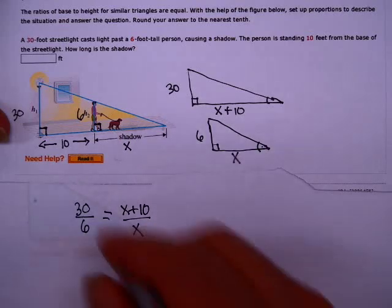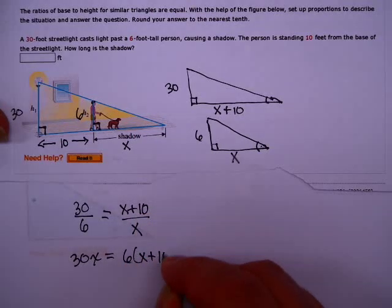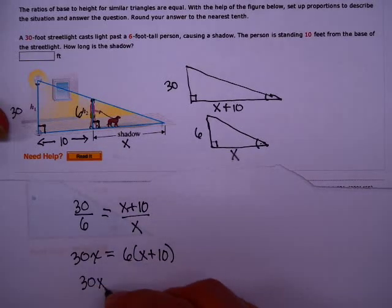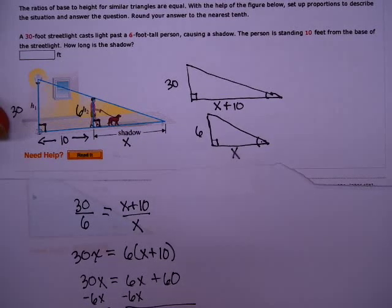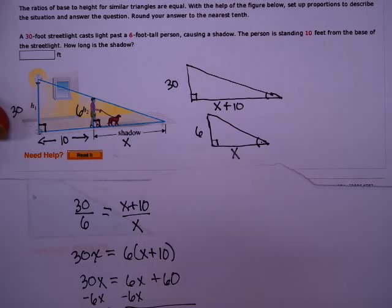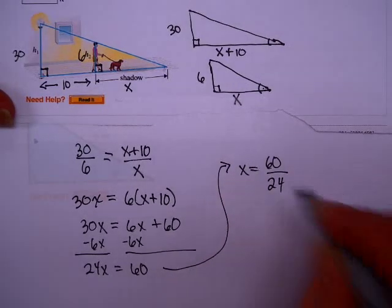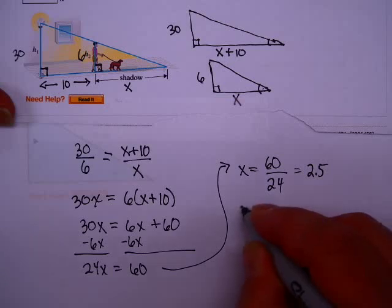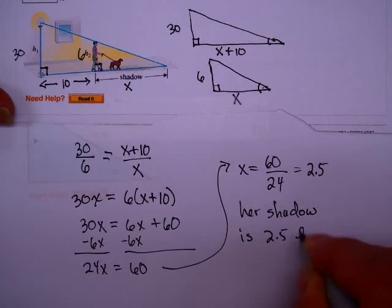To finish this, we're just going to cross multiply. 30 times X equals 6 times X plus 10. Notice the parentheses here. I'm multiplying the 6 by the entire quantity. 30X equals 6X plus 60. I'm going to subtract 6X from both sides. I get 24X equals 60. X equals 60 over 24. Using your calculator, 60 divided by 24 is 2.5. So her shadow is 2.5 feet long is the answer to this question.